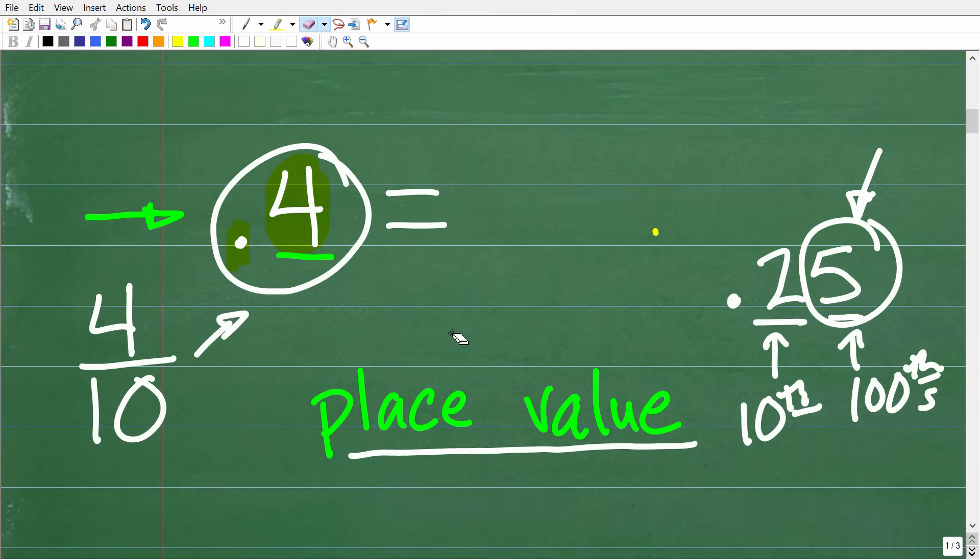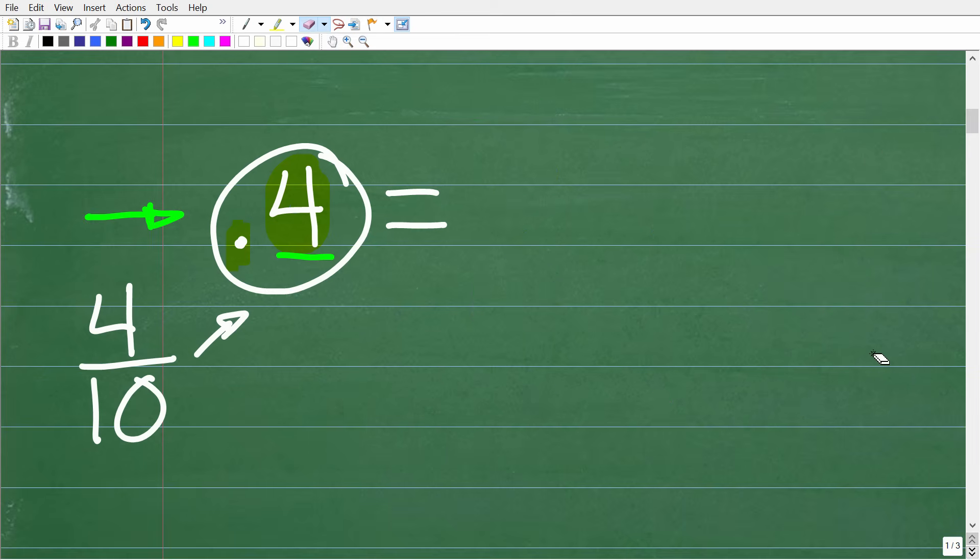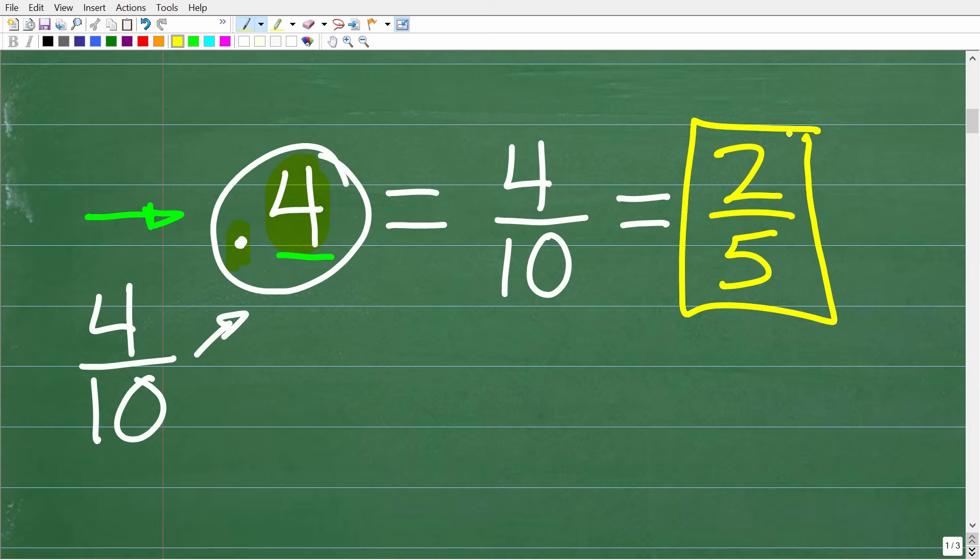So let's go ahead and write that, because we're not quite done. The one thing you always want to do with fractions is simplify them. Four over ten is the same as 0.4. Now, we can reduce this fraction. Two goes into four twice, and two goes into ten five times. So our final answer is two fifths.